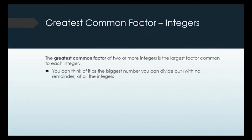Now, the greatest common factor — we're going to first focus on numbers or integers. We don't talk about greatest common factor with fractions or decimals, though we could. We usually look at it with whole numbers, positive or negative — integers. The greatest common factor is the largest factor that is in common across a set of numbers.